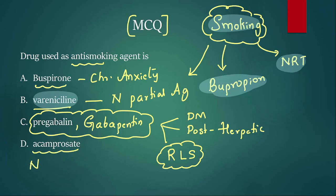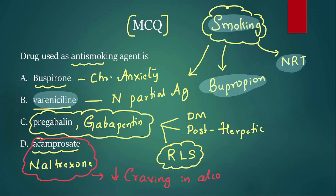Acamprosate and naltrexone — when you read these two, think of alcohol. They are used to decrease craving in alcohol dependence. Remember the mnemonic NOTA: Naltrexone, Ondansetron, Topiramate, and Acamprosate — these are drugs to decrease craving in alcohol. The answer for this MCQ is varenicline.